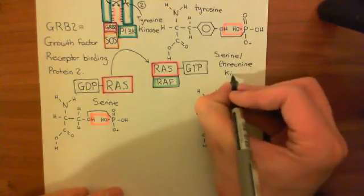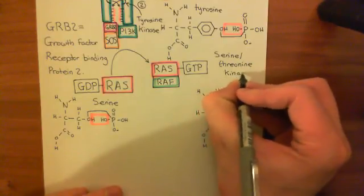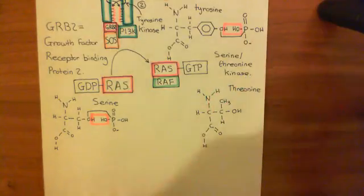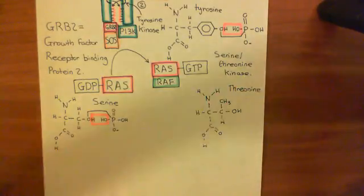Those are serine-threonine kinases, of which RAF proteins are an example. We'll call it there for this video and continue our discussion of these pathways in the next video.